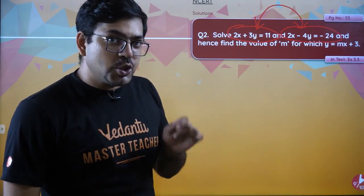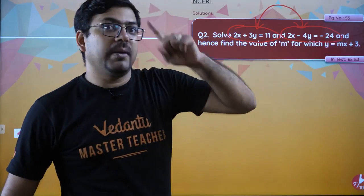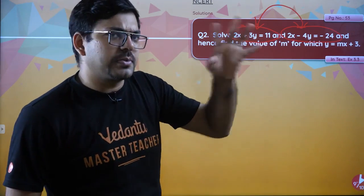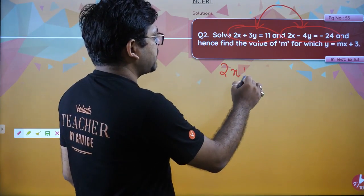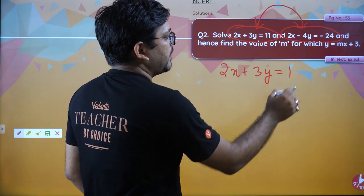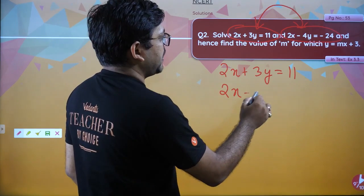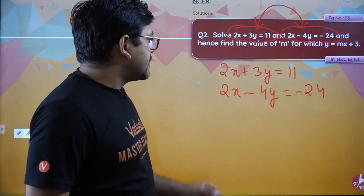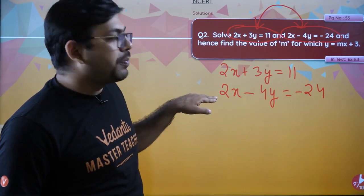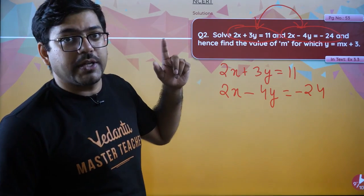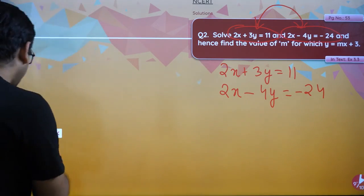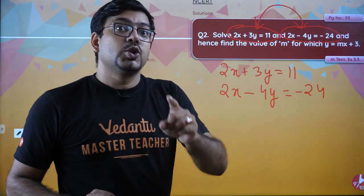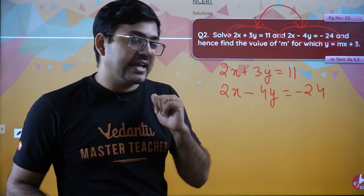So we have 2x + 3y = 11 and 2x - 4y = -24. If I subtract the second equation from the first, the answer will come out instantly. I am using the elimination method. If anyone has difficulty with elimination, you can also use substitution. Here it is easy to see.